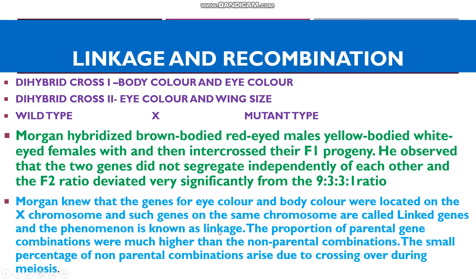Linked genes are genes located on the same chromosome. The genes for body color and eye color are located on the same chromosome and are linked genes. Linked genes tend to move together from one generation to the next. So the proportion of parental combinations was much higher than the non-parental combinations, also called recombinants. A small percentage of recombinants arise due to crossing over during meiosis.